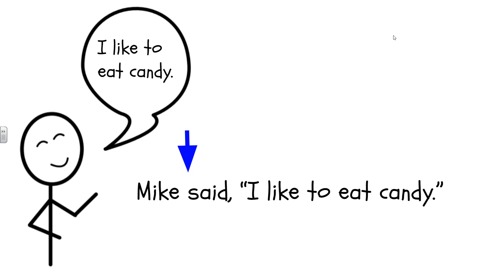The first thing we have to do is tell who is talking and how they said it. In this case, it just says 'Mike said,' but we could have said 'Mike yelled,' 'Mike whispered,' or 'Mike shouted.' However they are saying the phrase, we need to include that, as well as who is saying it. After that, we need to make sure that there is a comma. The comma comes before the quotation marks, and it separates the quote from who is saying it.